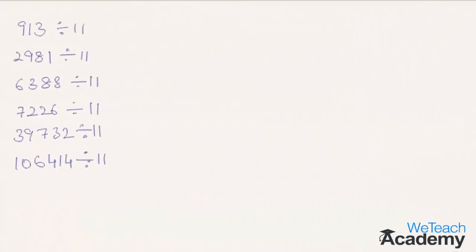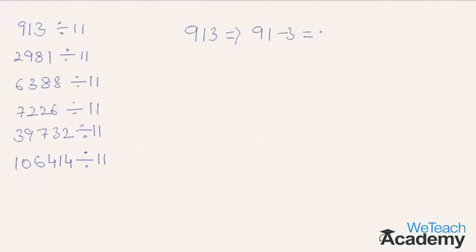Now let me explain this concept with a few examples. Coming to the first example: 913 divided by 11. According to the concept of subtracting the last digit from the remaining number, we get 91 minus 3, which is equal to 88. That is nothing but 11 into 8, so the given number is divisible by 11.